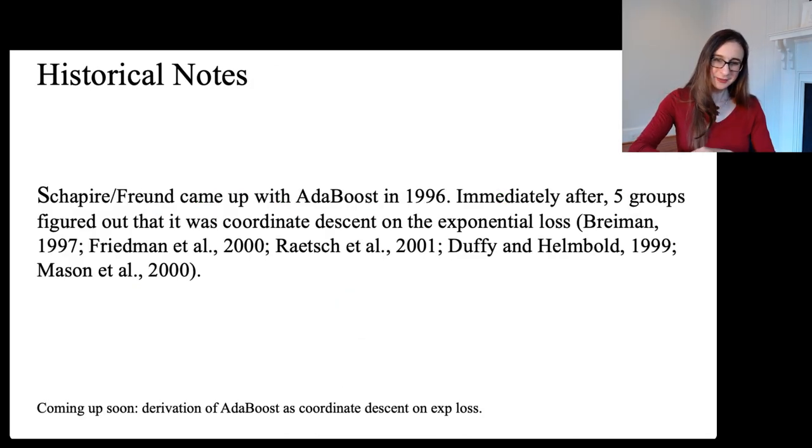Just some historical notes. Freund and Shapire came up with AdaBoost in 1996. Immediately after they published it, five different groups of scientists figured out that AdaBoost was simply coordinate descent on the exponential loss. And so that interpretation makes it very easy to derive things like the formula for alpha in terms of the error rate. That's why I'm going to derive AdaBoost's whole formulation through the coordinate descent derivation. I will be doing that soon. Thank you.